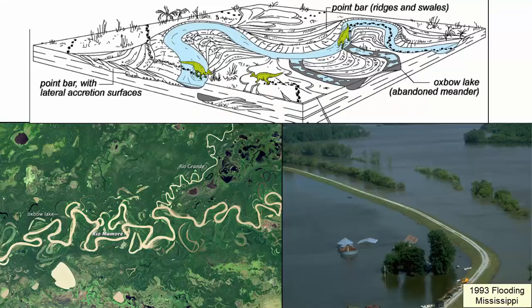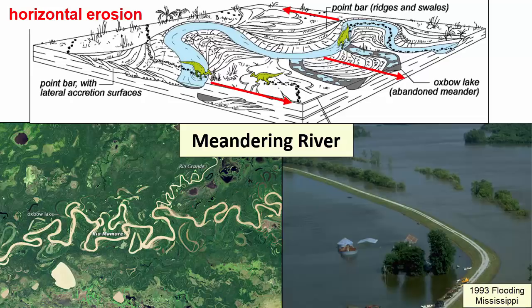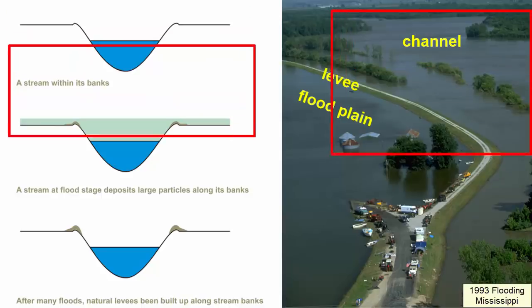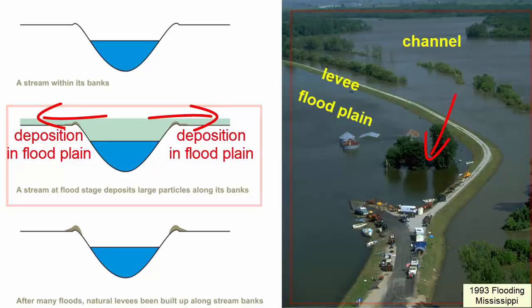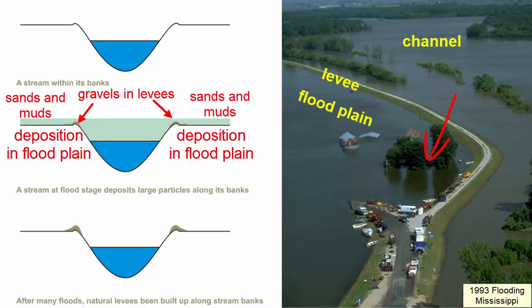Meandering rivers no longer have downward eroding work to do as they move across flat plains close to sea level; instead they erode horizontally, meandering across the landscape and carving new channels during floods. Most of the year the river sits in its channel, but when discharge increases during heavy rains, rivers can overtop their banks and spill out into the surrounding land. A fast-moving river full of sediment will immediately slow down as it spreads across the flat plain on either side of the channel — these plains are known as floodplains. The drop in velocity causes deposition; the largest gravels deposit along the banks, creating structures called levees, while finer sands and muds deposit behind the levees across the floodplain.